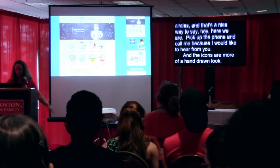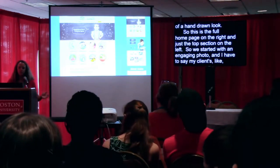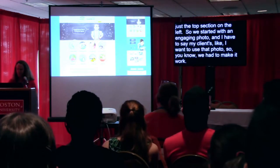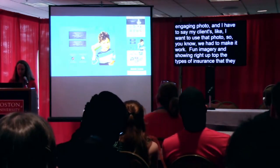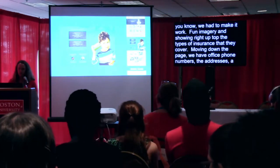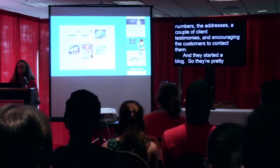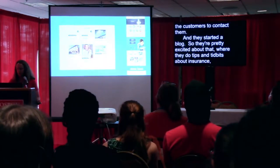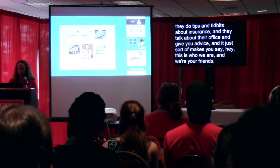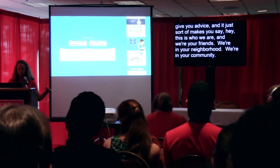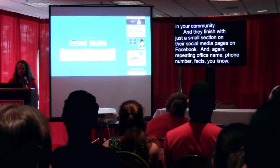This is the full homepage on the right and just the top section on the left. We started with an engaging photo the client wanted. Fun imagery and showing right up top the types of insurance they cover. Moving down the page, we have office phone numbers, addresses, client testimonials, and encouragement to contact them. They started a blog with tips about insurance and office news. They finish with social media, office name, phone, fax, and a button for a quick quote.